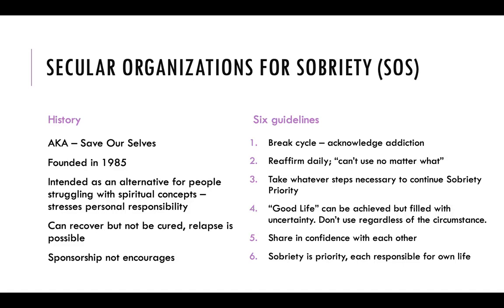The group also offers anonymity and focuses on abstinence from all substances. There are six guidelines offered by SOS to help their members achieve recovery. One, the individual must break the cycle by acknowledging their addiction. They must reaffirm daily that they cannot use no matter what. They must take whatever step necessary to continue their sobriety priority. The good life can be achieved but filled with uncertainty, so don't use regardless of the circumstance. Share in confidence with each other, and sobriety is a priority — each person is responsible for their own life.